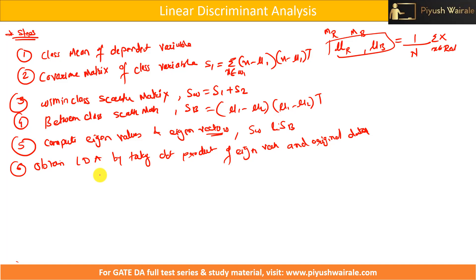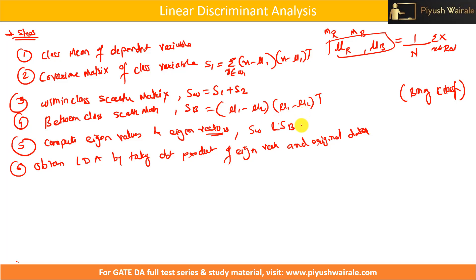In this way we can reduce dimensionality from 2D to 1D. Here I am talking about the binary classification case, where we have just two features. We find the eigenvalues and eigenvectors and take the highest one, selecting the eigenvector corresponding to the maximum eigenvalue. But what happens in the case of K classes?